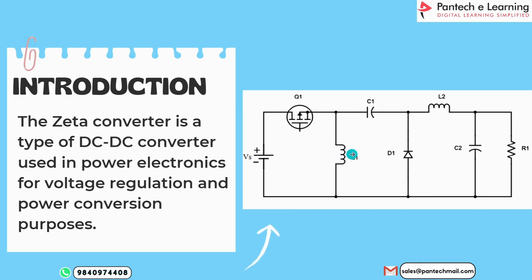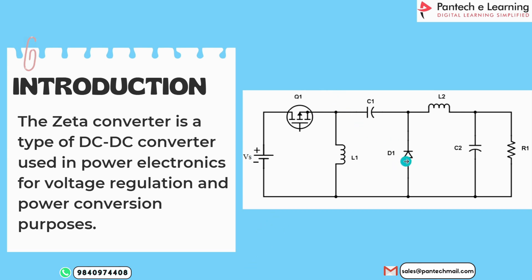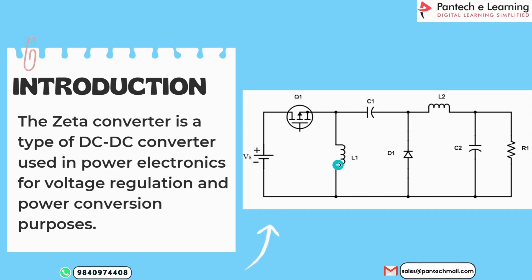This block diagram has two modes of operation. In Mode 1, the switch is closed. When the switch is turned on, the diode will be reverse biased — it acts as an open circuit for the diode and short circuit for the switch. At that time, the reverse voltage across the diode equals minus Vs plus V0, meaning the input supply voltage and output voltage. In that period, inductors L1 and L2 are in a charging condition.